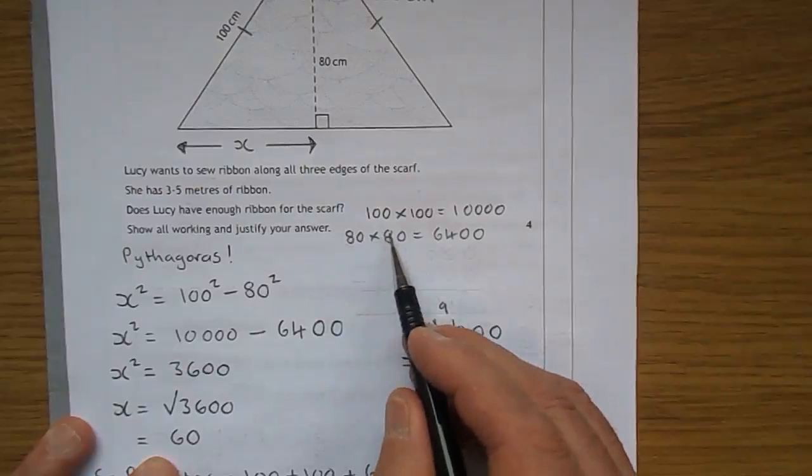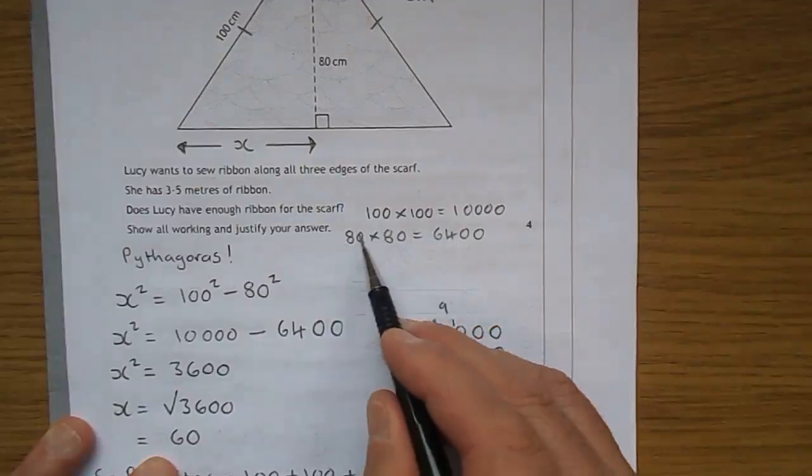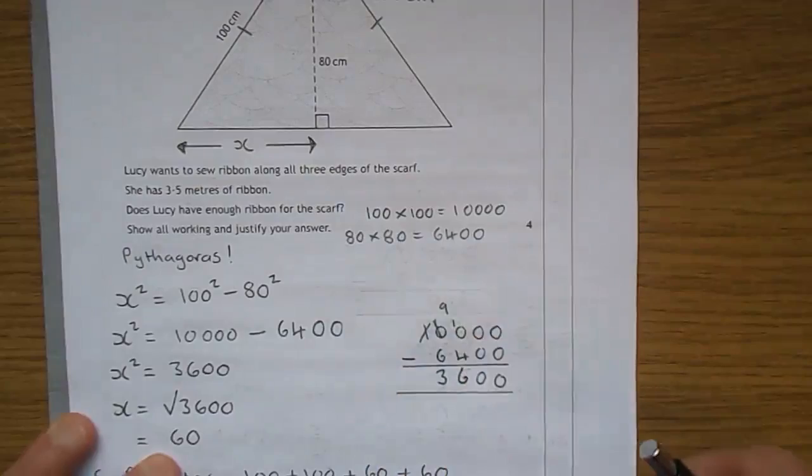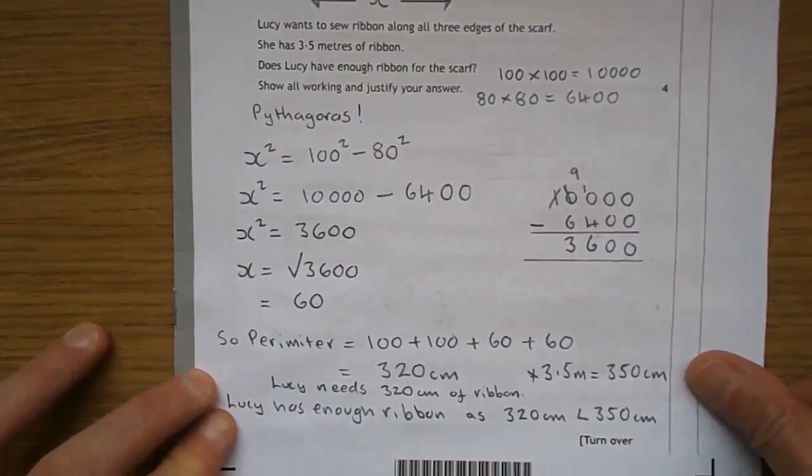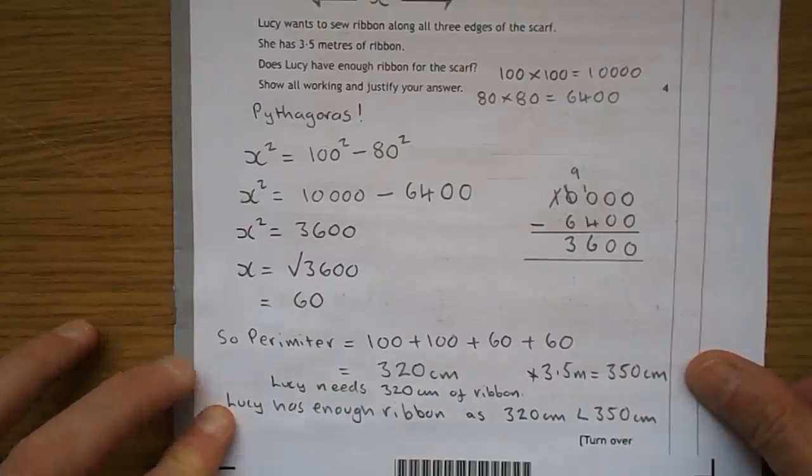What's 80 squared? 8 times 8, 64, with two zeros: 6,400. So here we have 10,000 take away 6,400 gives you 3,600.